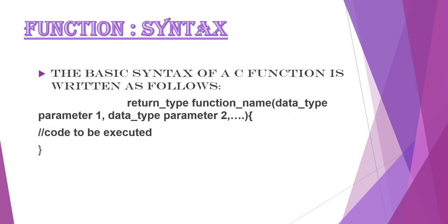Function Syntax. The basic syntax of a C function is written as follows: return_type function_name, within the parenthesis there are some inputs. Here return type indicates the type of output returned by the function. The function name indicates the name of the function and the set of inputs within the parentheses indicates the input provided to the function.